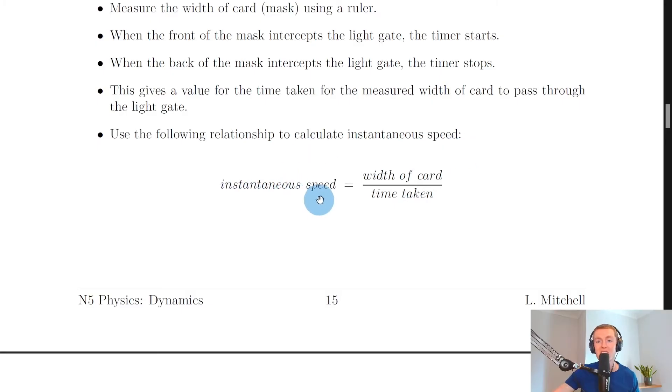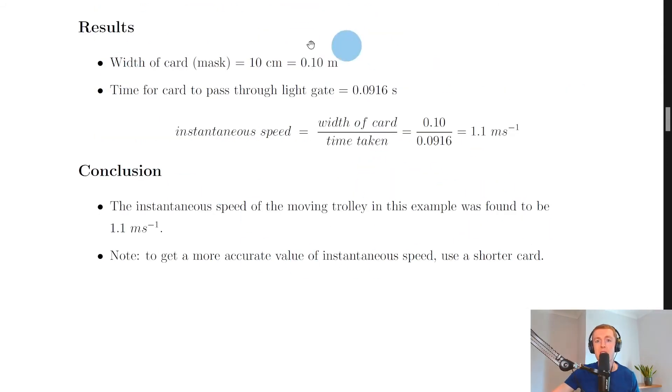The instantaneous speed equals the width of the card divided by the time taken. This differs from average speed—for average speed we were looking at the distance between the two light gates divided by the time, whereas here our distance is actually given by the width of the card.